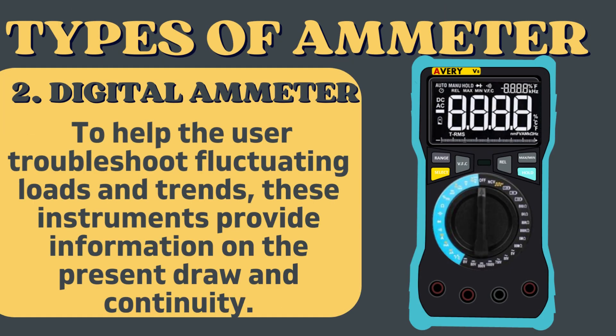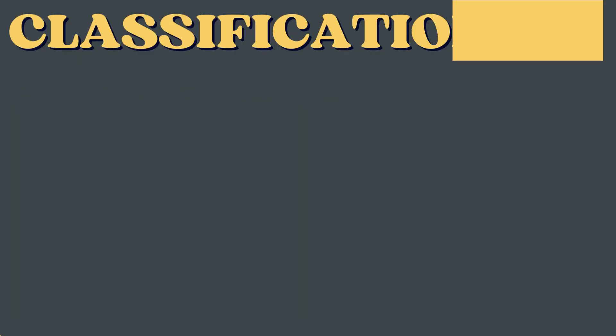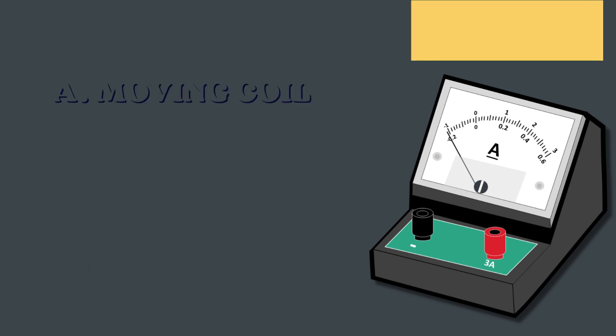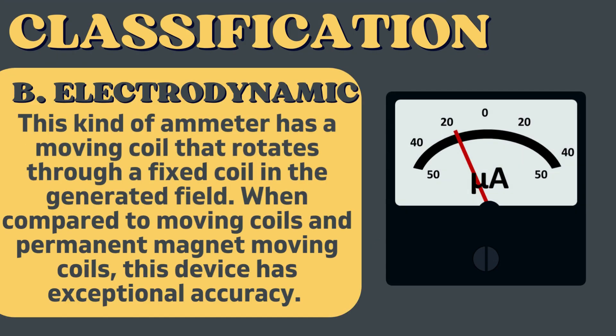Regarding classification, the first type is the moving coil ammeter. It works by taking advantage of magnetic deflection, which causes a coil to move inside the magnetic field as current flows through it. This device's coil is free to move back and forth between the poles of permanent magnets.